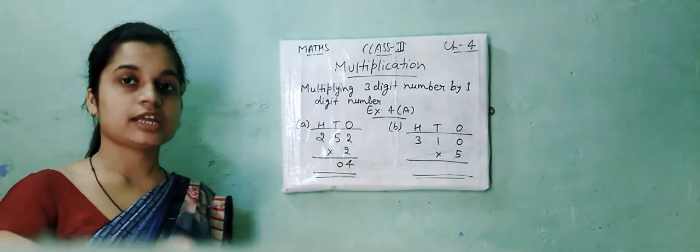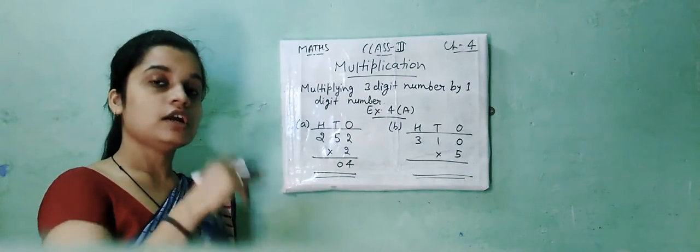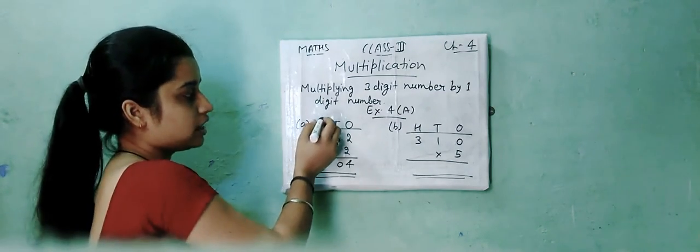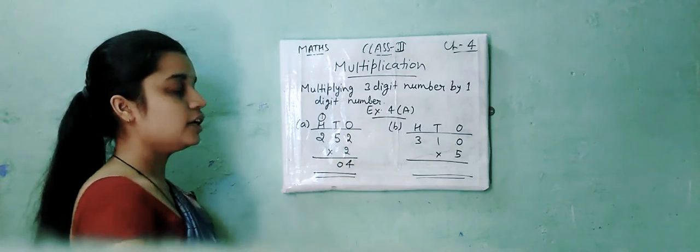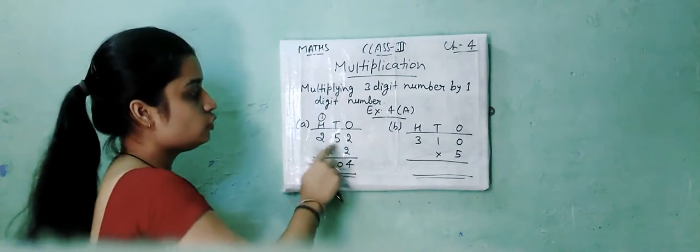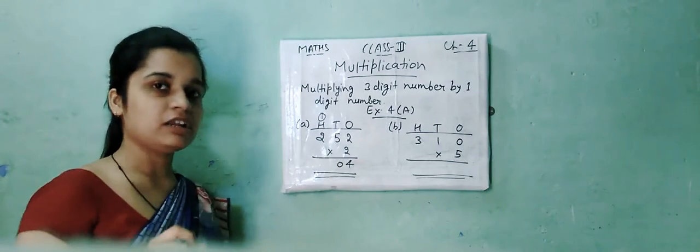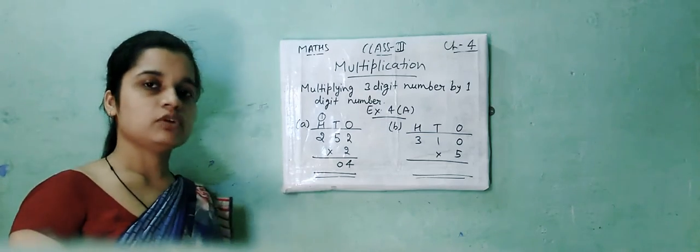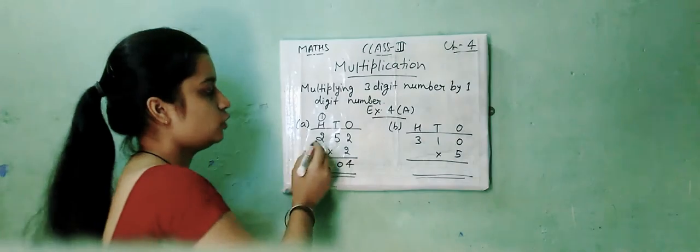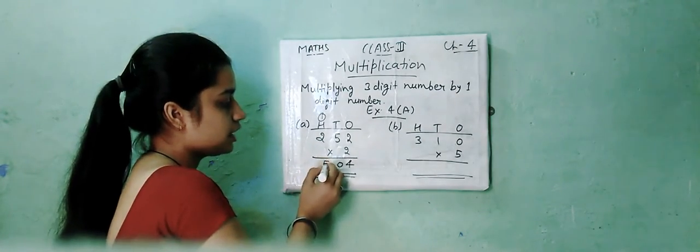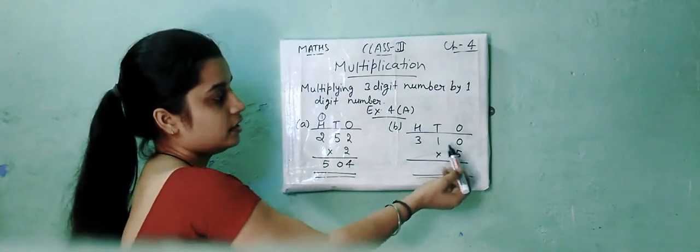5 into 2 is 10. Just like in addition and subtraction, we always write the ones place and carry forward the tens place to the next place. So 5 into 2 is 10, one carry forward here on hundred place. Then 2 into 2 is 4, and the one that is carried over we add. So 2 into 2 is 4 plus 1, that is 5. The answer is 504 for the first solution.